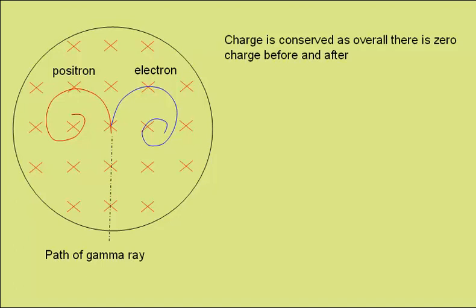Charge is conserved, as overall there is zero charge before—the gamma ray photon has zero charge—and zero charge after. We have a charge of plus one and a charge of minus one.